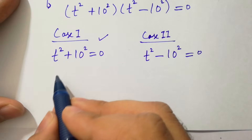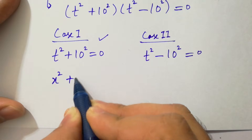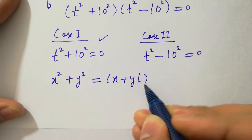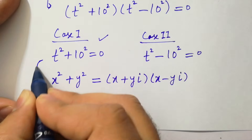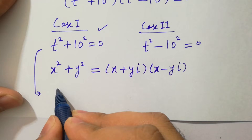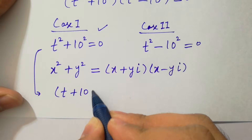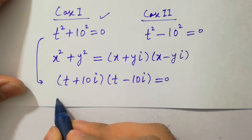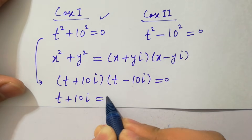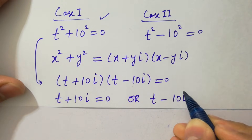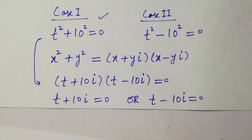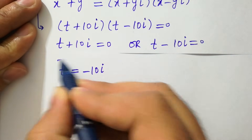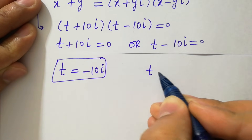First, solve case one. We know x square plus y square equals x plus yi times x minus yi, where i is from complex numbers. Applying this, t square plus 10 square gives t plus 10i times t minus 10i equal to 0. Either t plus 10i equal to zero or t minus 10i equal to zero. We have two values of t: t equal to minus 10i and t equal to plus 10i.